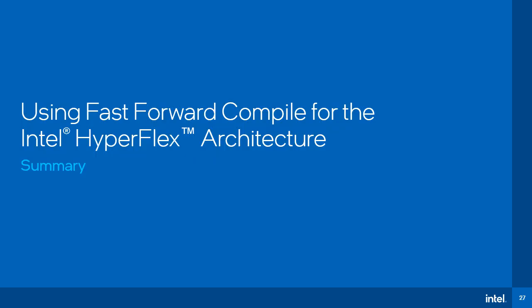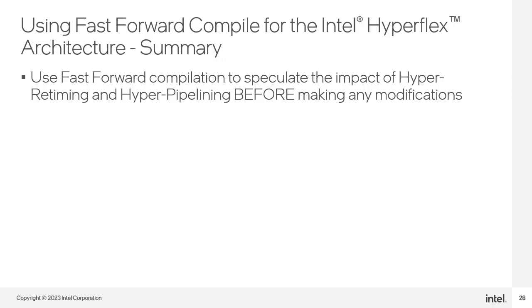So this concludes our look at using Fast Forward Compile for the Intel HyperFlex architecture. In summary, Fast Forward Compile makes it easy for you to analyze what it will take for your design to run faster on an Intel FPGA made with the HyperFlex architecture. Along with its recommendations, Fast Forward also provides potential clock speed improvements that are possible if those changes are made — and this can be done before you actually make any modifications to the code.